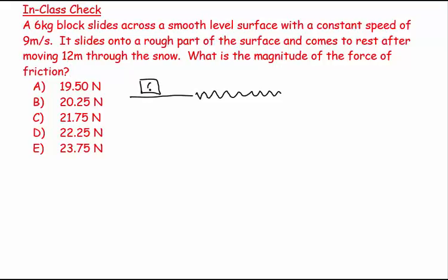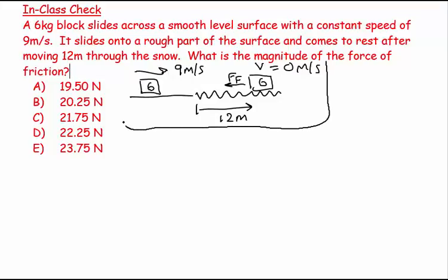If I draw a picture of the smooth bit, I have 6 kilograms and this is going at 9 meters per second. Then it hits onto the snow and there's going to be a frictional force, and the velocity is going to equal 0 meters per second once I've traveled 12 meters.